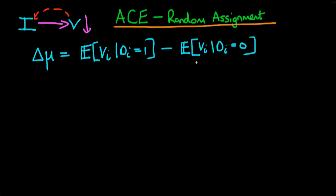In this video I want to talk about how random assignment of treatment can actually allow us to evaluate the average causal effect. What we're interested in is whether, in a conflict area, infrastructure spending actually causes a decline in the level of violence.